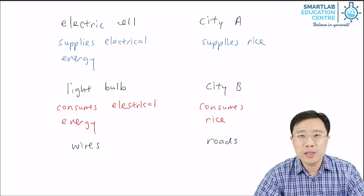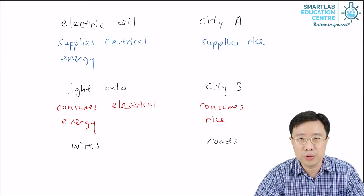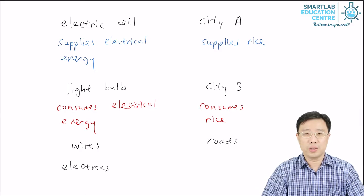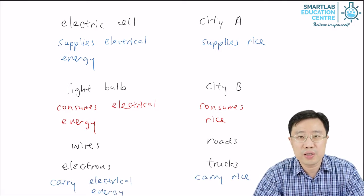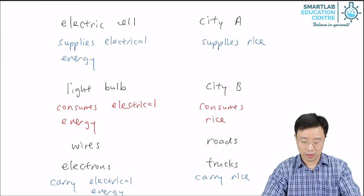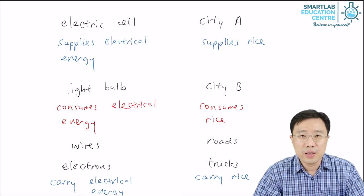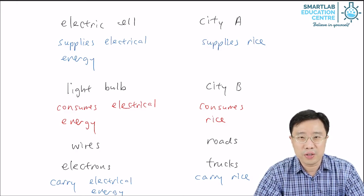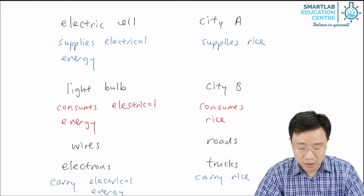The wires in the electric circuit are just like the roads in the story. The electrons carry electrical energy. They are just like the trucks in the story, which carry rice. And the rice in the story is of course the electrical energy in the electric circuit.